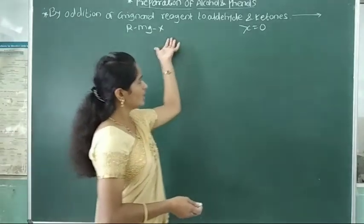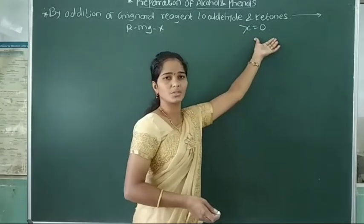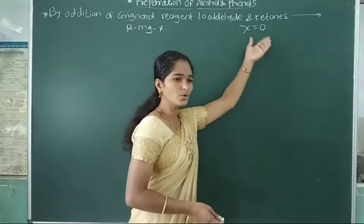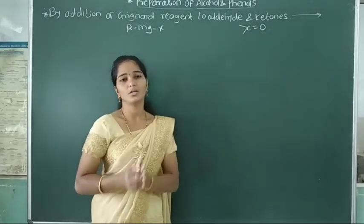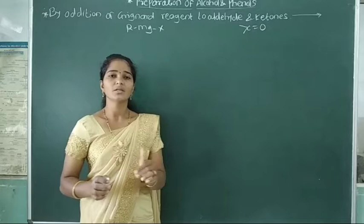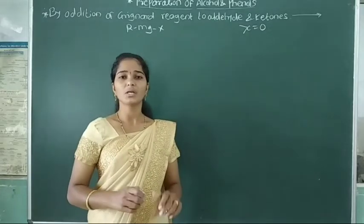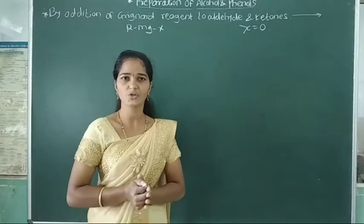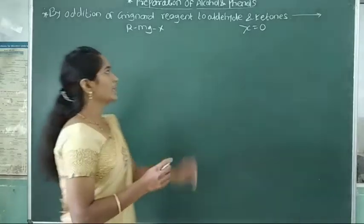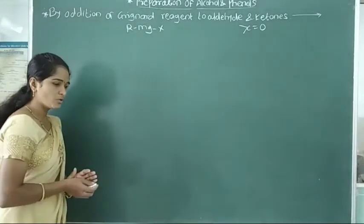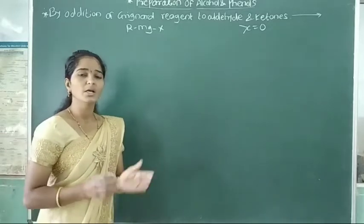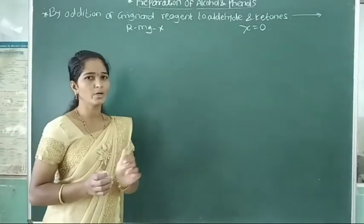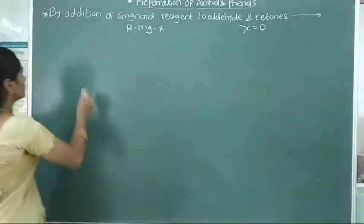This Grignard reagent adds into carbonyl compounds — aldehyde and ketones — to form an adduct. This adduct then undergoes hydrolysis with dilute acid to give your alcohols. First there is formation of the adduct, then hydrolysis of the adduct gives the corresponding alcohol.